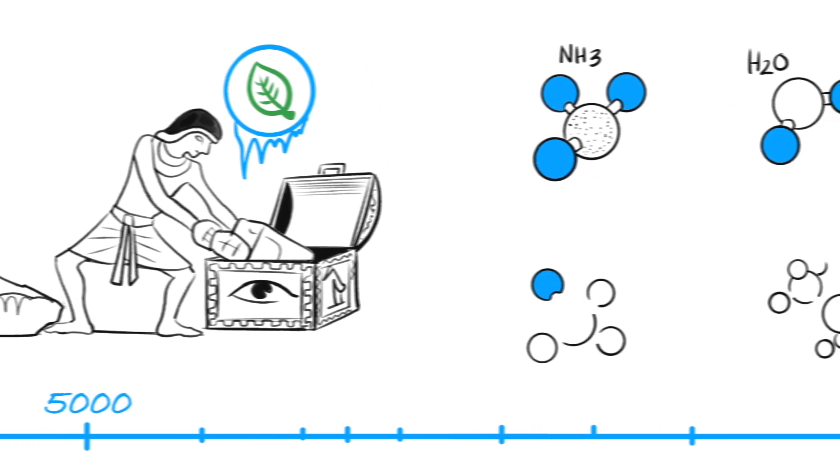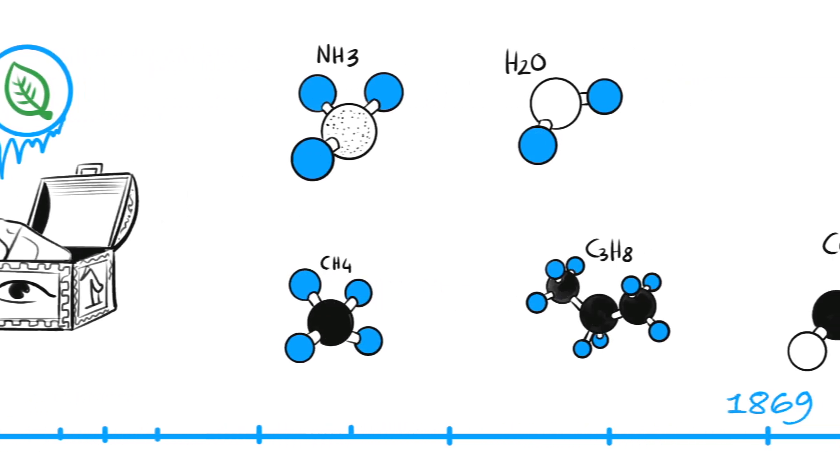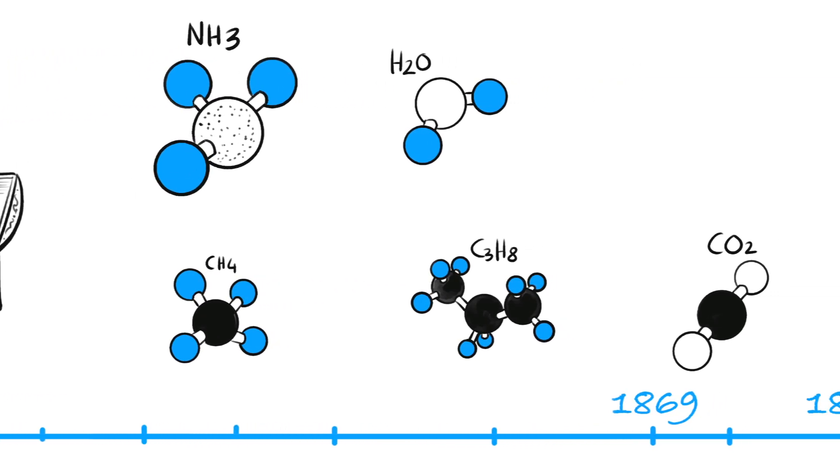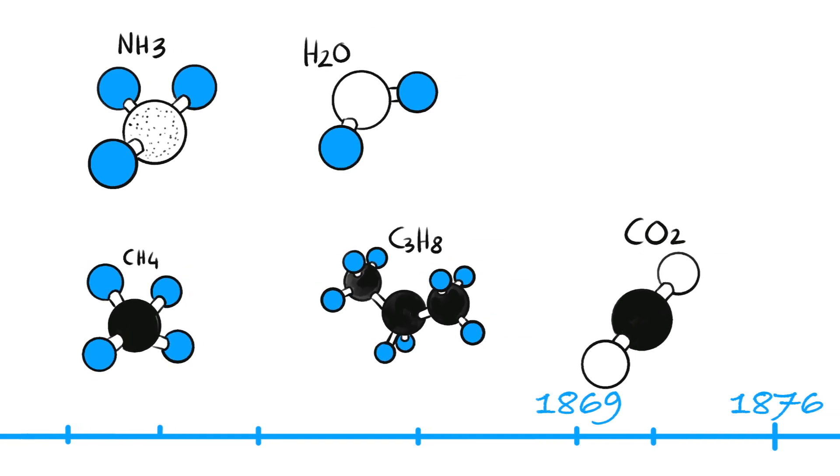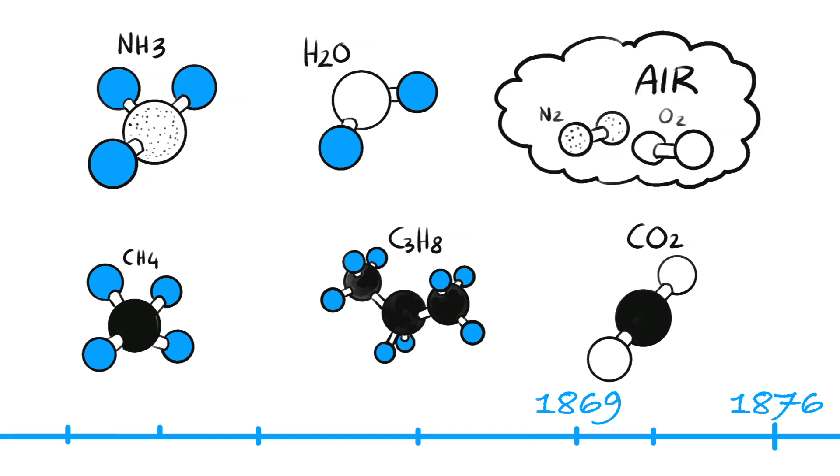A total of four natural substances can be used as refrigerants: ammonia, water, hydrocarbon and carbon dioxide. Additionally, air with its central components, oxygen and nitrogen, can also be used as a refrigerant.